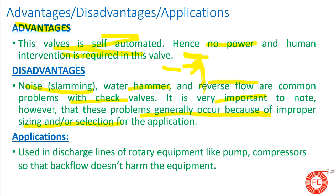Applications: check valves are used in discharge lines of rotary equipment like pumps and compressors so that backflow doesn't harm the equipment. In the case of a pump, backflow may strike the impeller and destroy its vanes. Similarly, in a compressor, back-flowing air can impact and destroy the equipment.